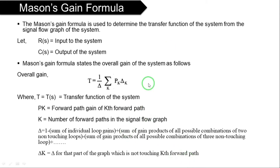We can use this simple formula to find the transfer function, but we need a signal flow graph — from the signal flow graph only we can find the transfer function. If the question consists of a block diagram, then we have to convert the block diagram to the signal flow graph, and after that only we use this formula. This is Mason's gain formula.